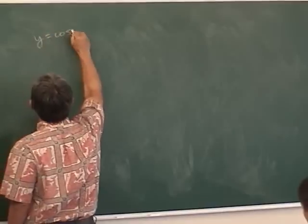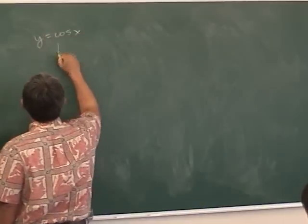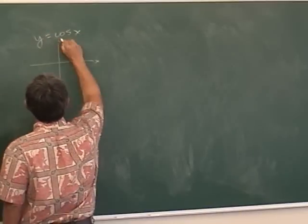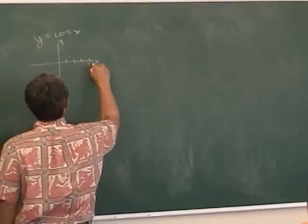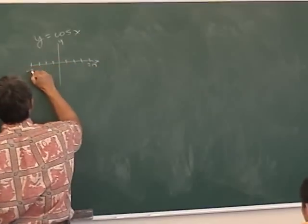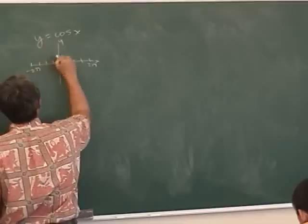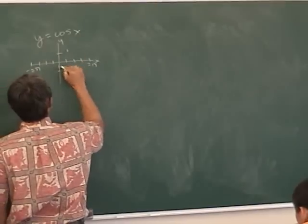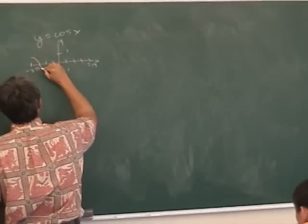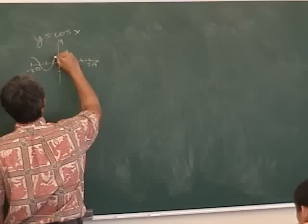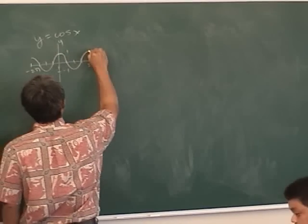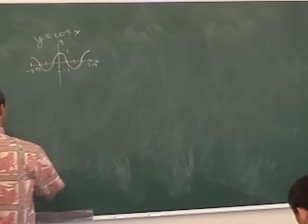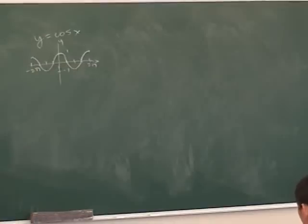What does that look like? It goes from one to negative one, and it looks like this. It keeps on going forever left and right. It's an even function.